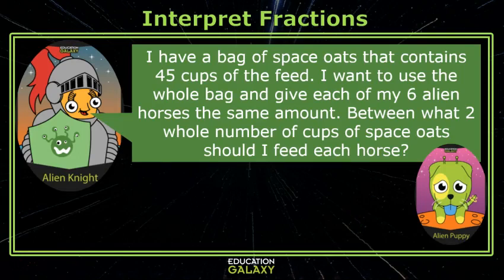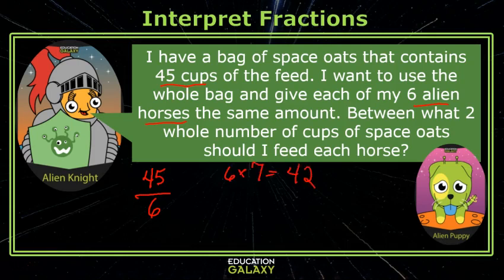Hello Alien Puppy. I have a bag of space oats that contains 45 cups of feed and I want to use the whole bag and give each of my six alien horses the same amount. Between what two whole numbers of cups should I feed each horse? Well Alien Knight, I'm pretty good with fractions and division. This would be 45 divided by six. I know that six times seven is 42 and six times eight is 48. So each horse gets between seven and eight cups.